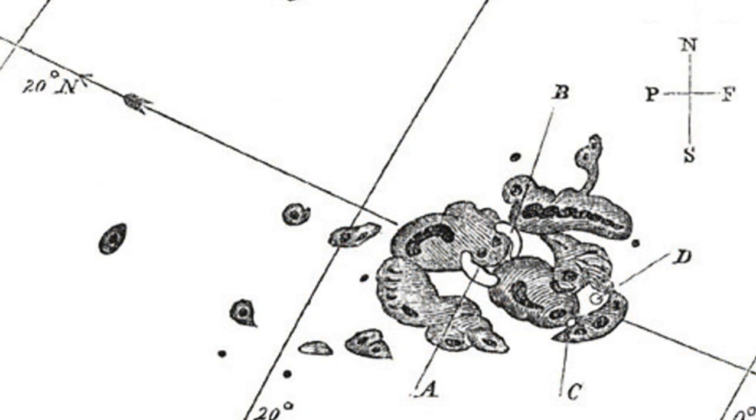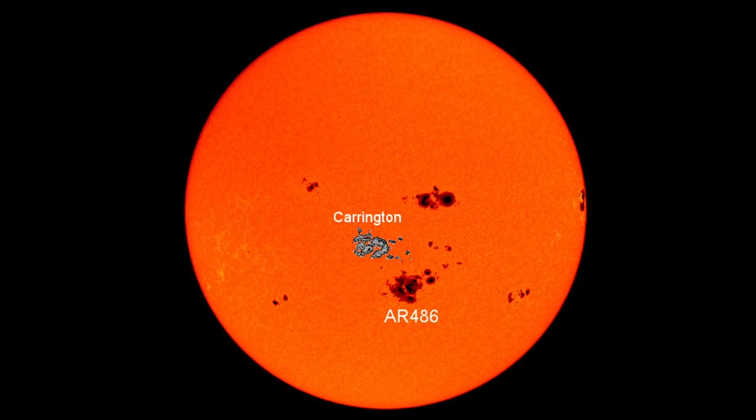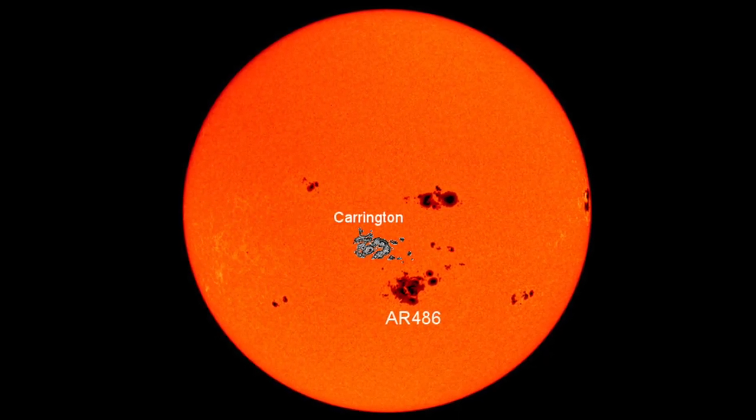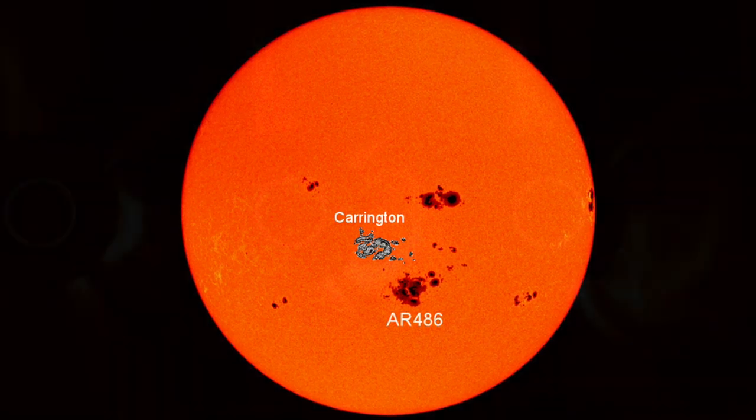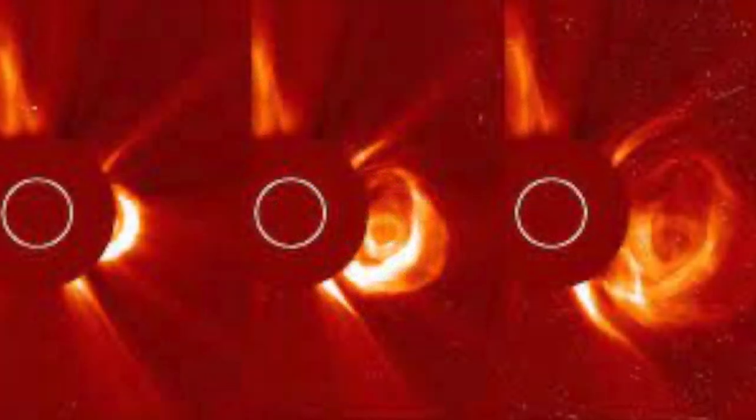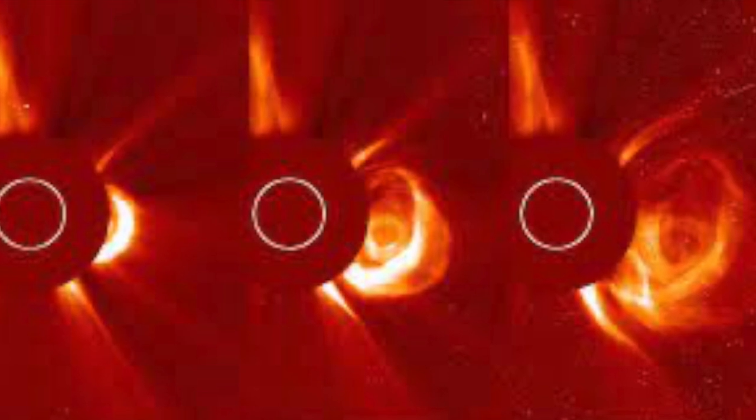Carrington's was certainly huge, and the last time we saw one that big was November 2003, when sunspot AR486 was observed. This released the strongest solar flare in the modern era, known as X28.